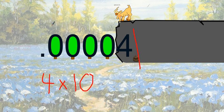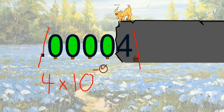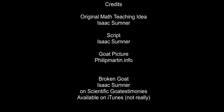Oh snap — now what do we have? Four times ten to the... that's a little number! Don't forget, we're representing a little number, so let's put a negative exponent: one, two, three, four, five — negative five. And Billy the scientific notation goat lived happily ever after.